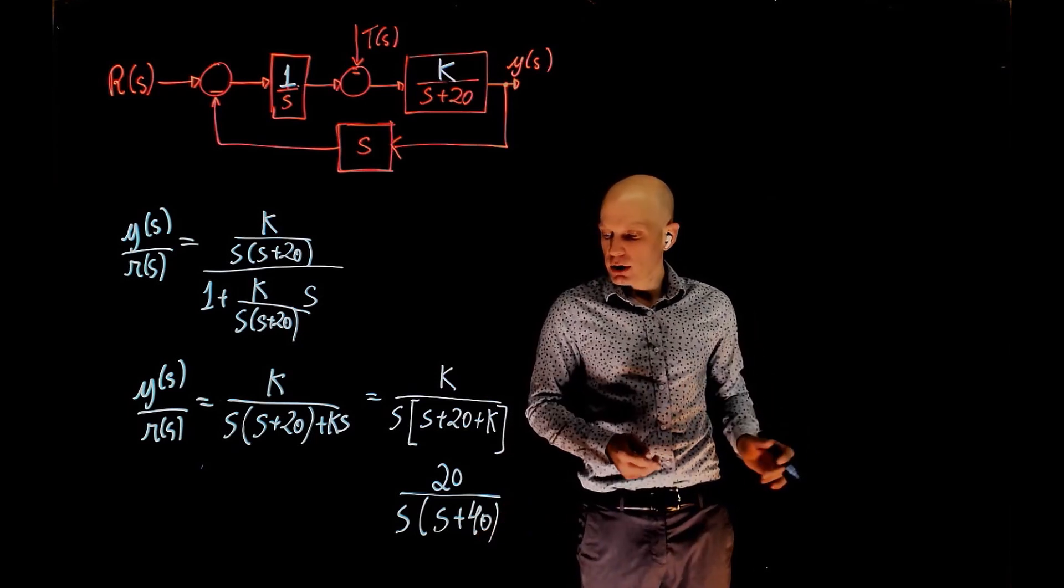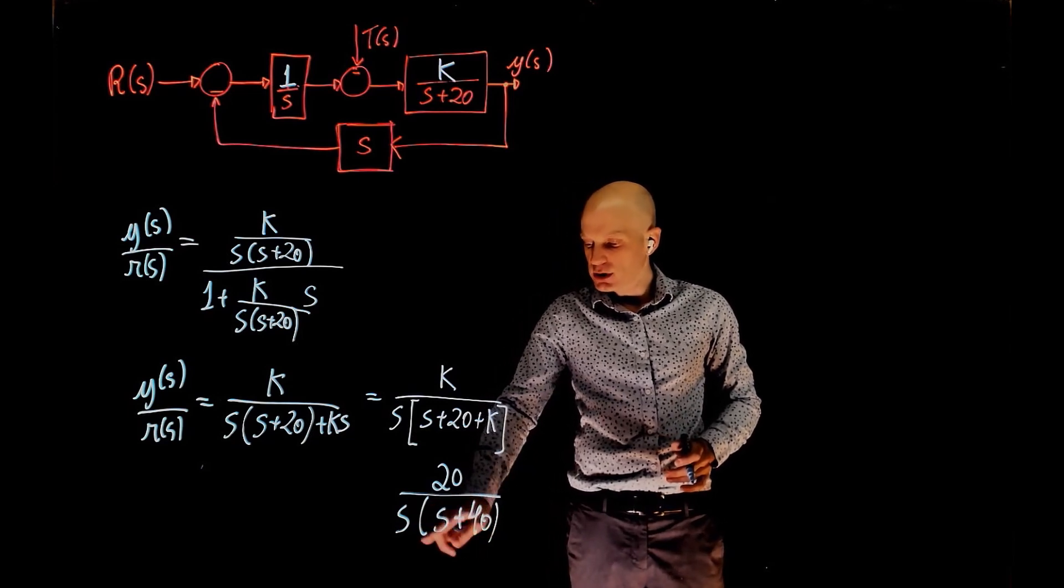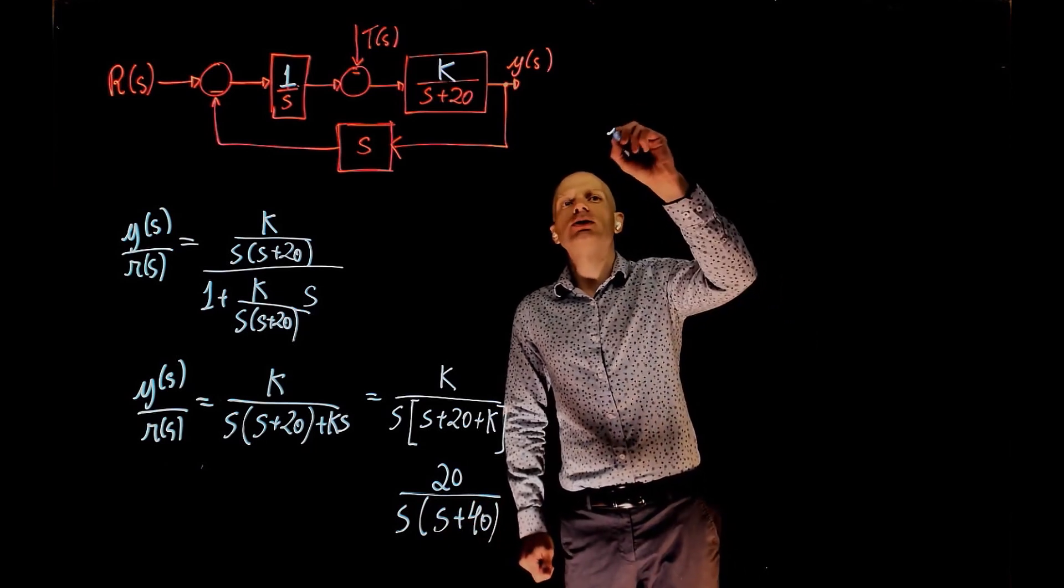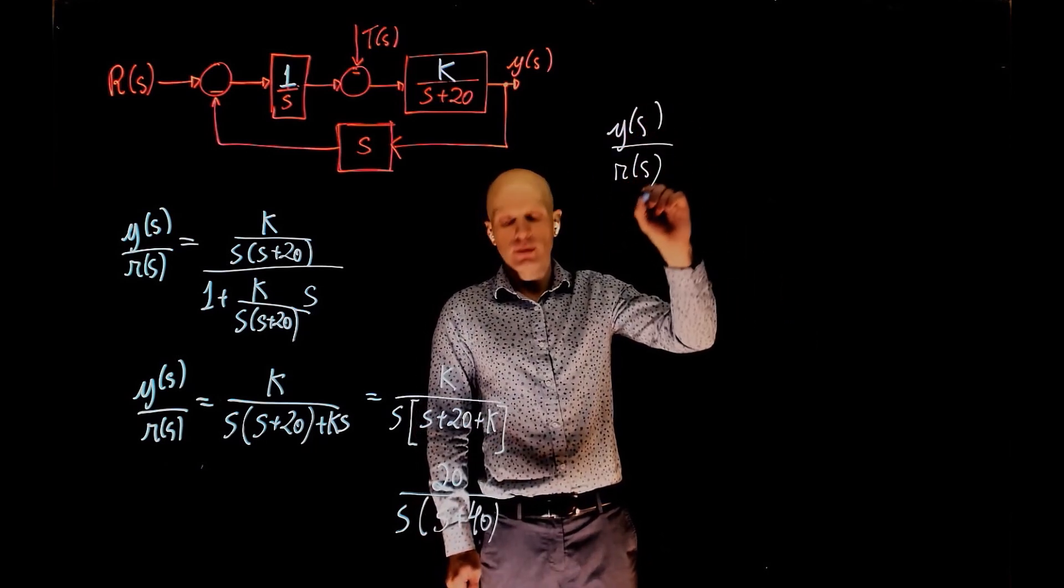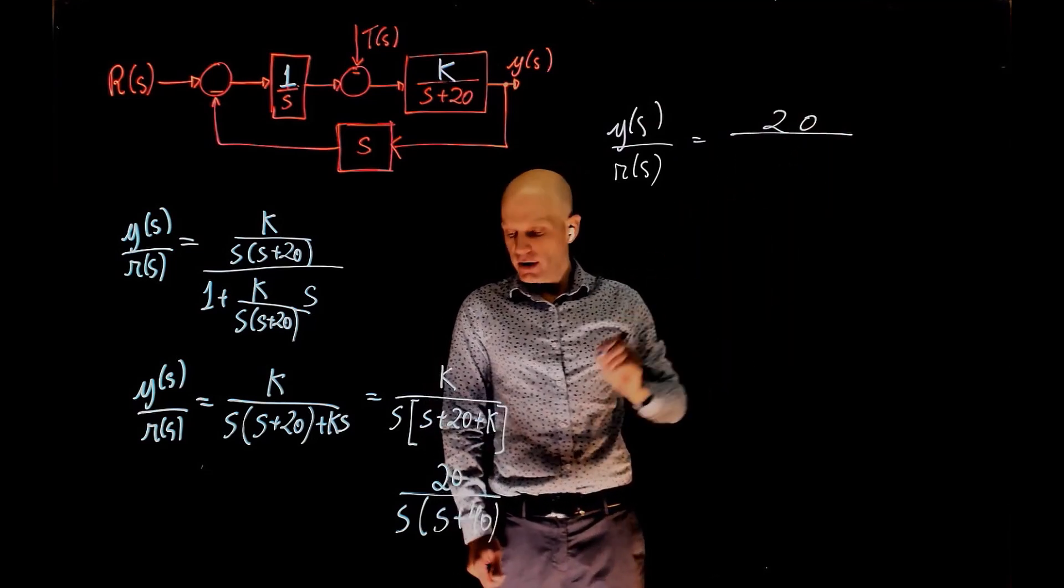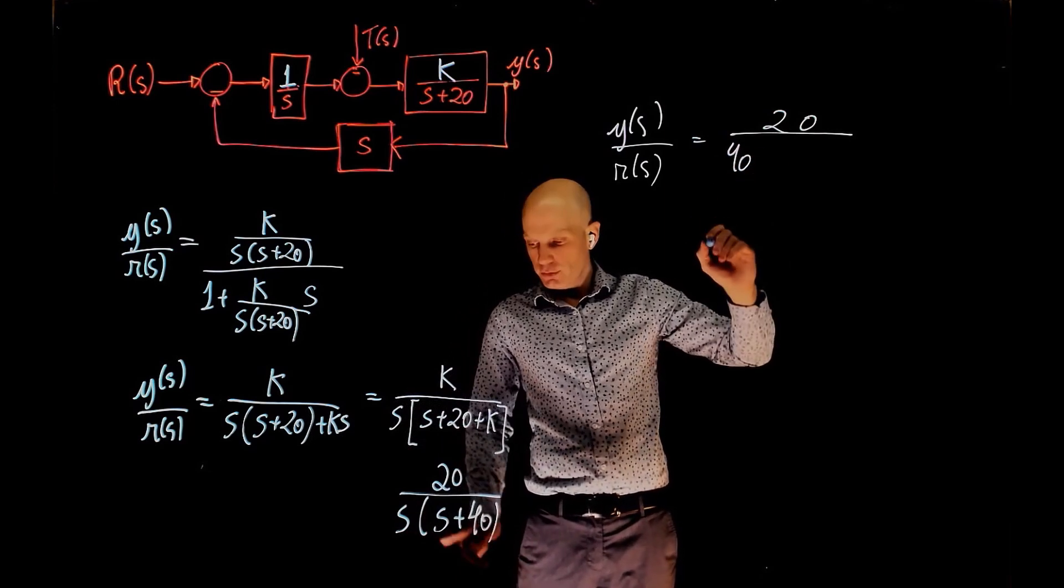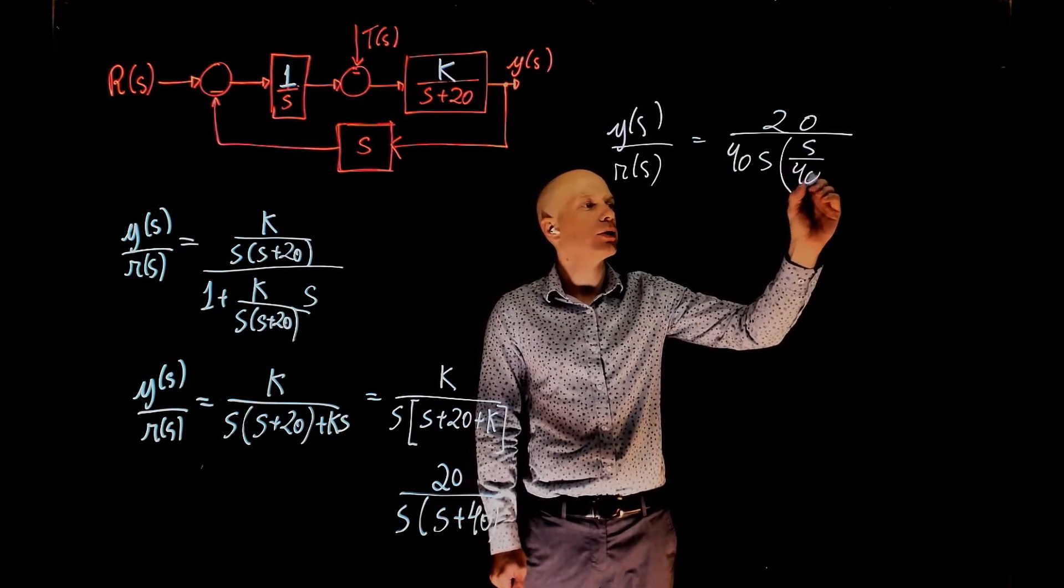And you know that the time constant is the unit that multiplies s when you have something as times s plus 1. So you can now rearrange this expression as y(s) over r(s) equals 20 divided by, factoring out 40 here, 40s times (s/40 + 1).